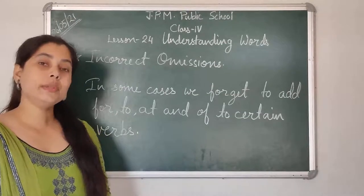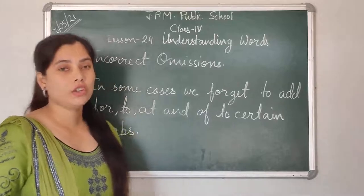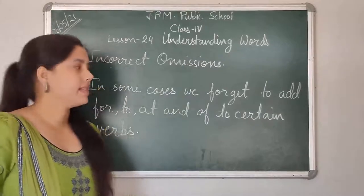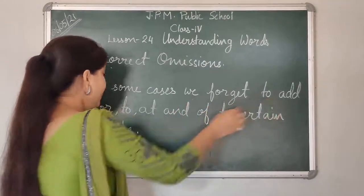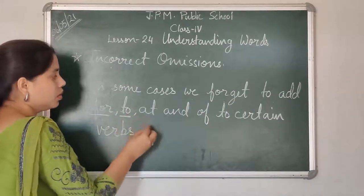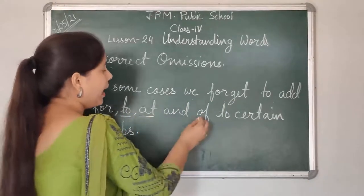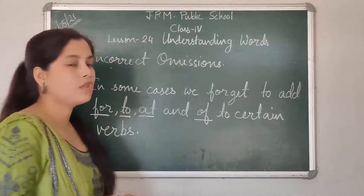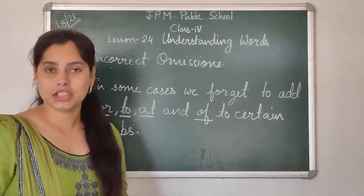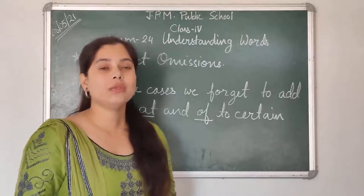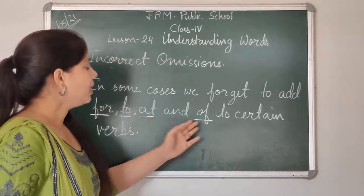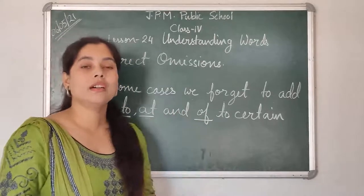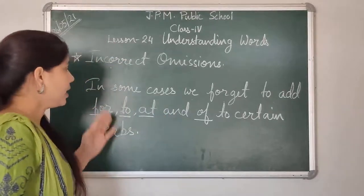Dear students, there is an additional topic given in your books, that is incorrect omissions. There are some cases when we forget to add for, to, at, or of to certain words. There are certain conditions during which we forget to use for, to, at, or of with the words. In this topic, we will learn about these incorrect omissions.